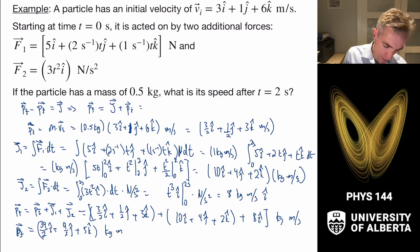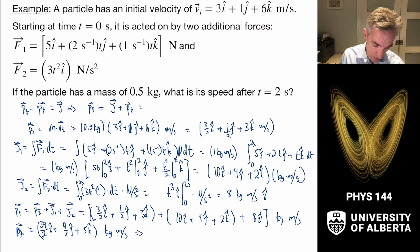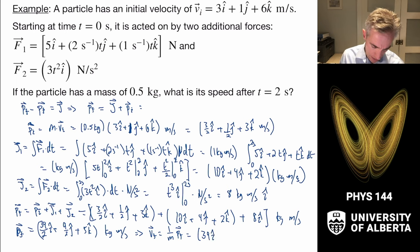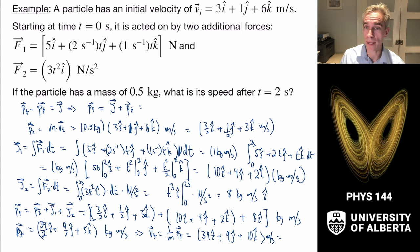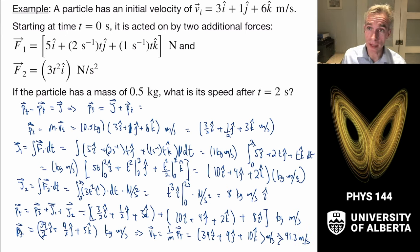The final velocity is (1/m) times p_final. With mass = 0.5 kg, v_final = 39î + 9ĵ + 10k̂ m/s. Applying the Pythagorean theorem to calculate the speed gives a magnitude of 41.3 meters per second.